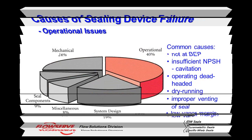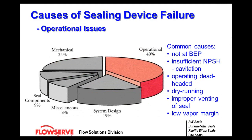Some common causes of operational failures: not operating the pump at the best efficiency point. Pumps are designed to operate in and around their best efficiency point — this is the optimal location for that pump to run. If you're outside of those regions, you can have flow characteristic problems which will cause a seal failure.